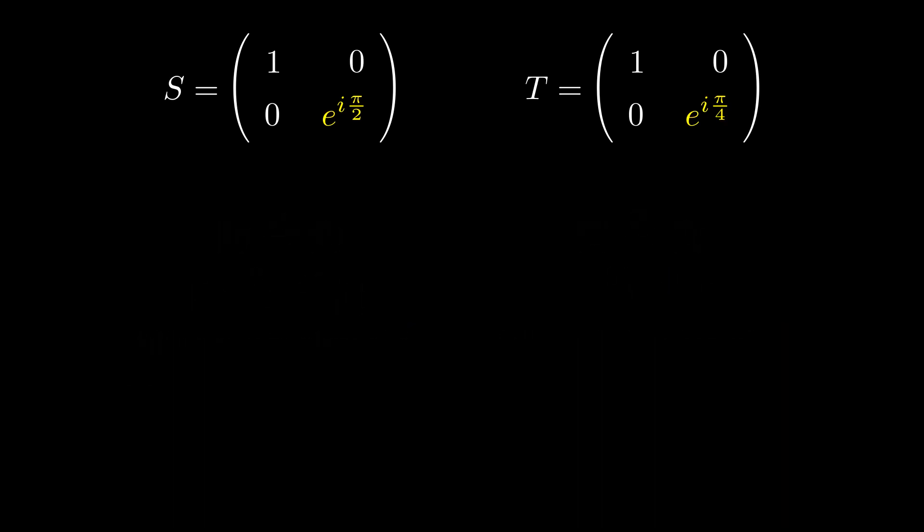If we take the conjugate transpose of the two matrices of the two gates, we get their inverses. For the S gate, we can see that applying S dagger adds a relative phase of negative pi on 2, which is the inverse of the S gate.